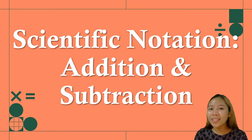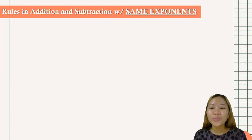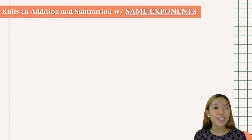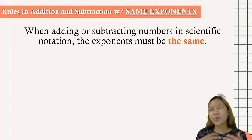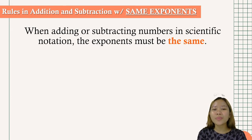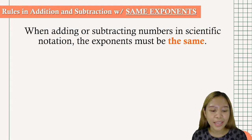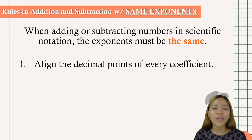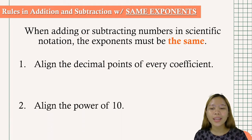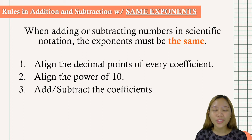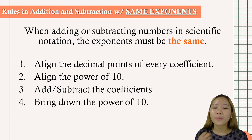As we start, let us get to know first the rules in addition and subtraction with same exponents. So when adding or subtracting numbers in scientific notation, the exponents should be the same. The first thing we need to do is to align the decimal points of every coefficient. Next, align the power of 10, then add or subtract the coefficients, and bring down the power of 10.